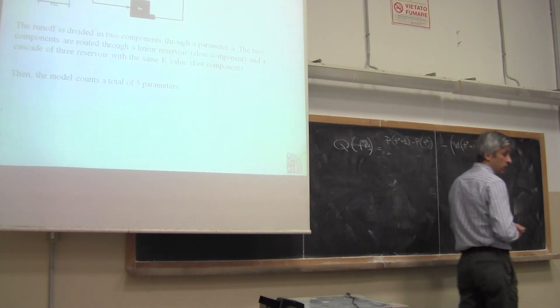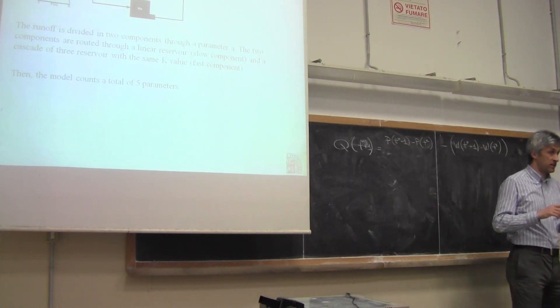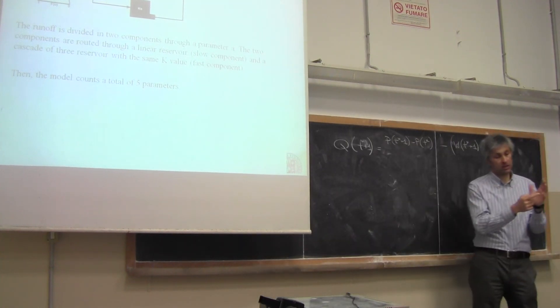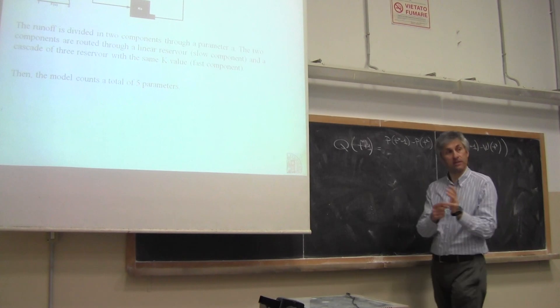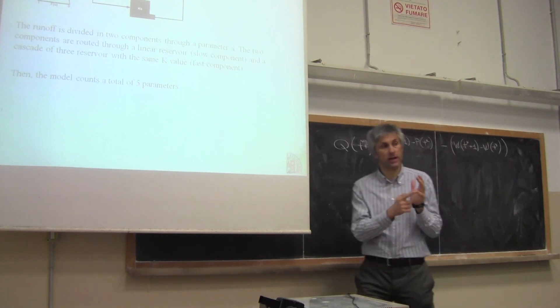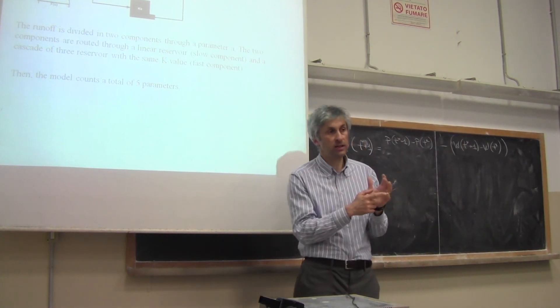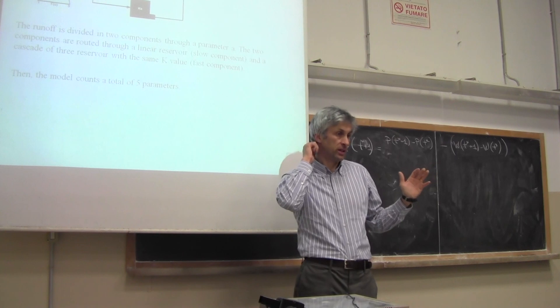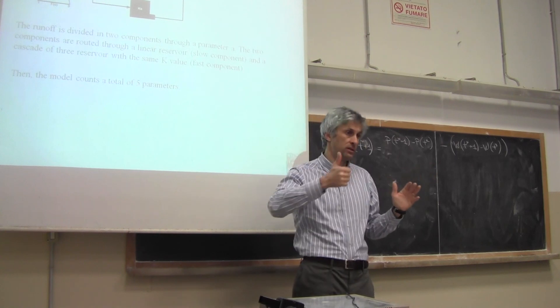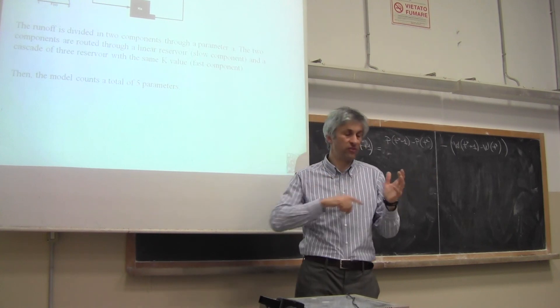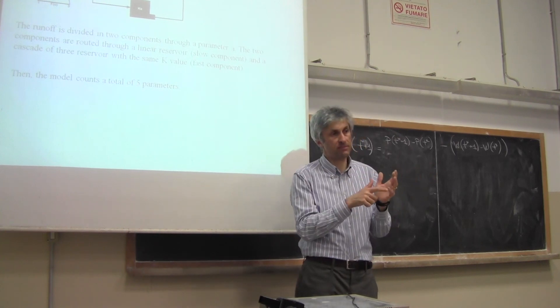Counting the model parameters: alpha, Ks, and Kq from the routing part — three parameters. Plus beta and Cmax from the production part — that gives five parameters in total. Alpha is dimensionless; Ks and Kq have units of one over time. In the linear reservoir exercise from last week you had one parameter; here we have five.